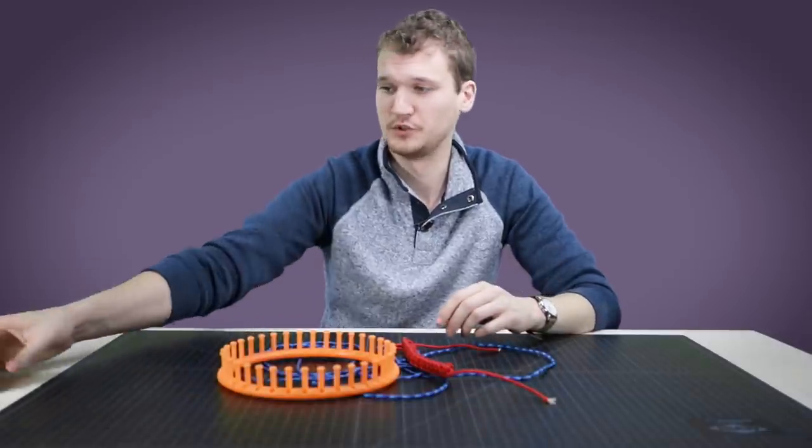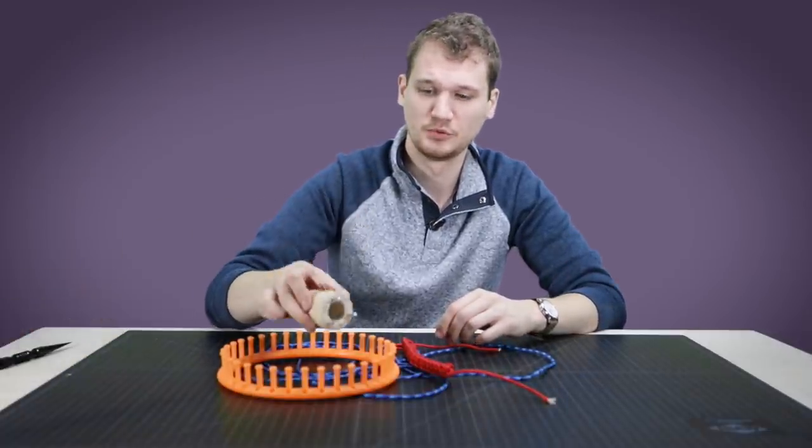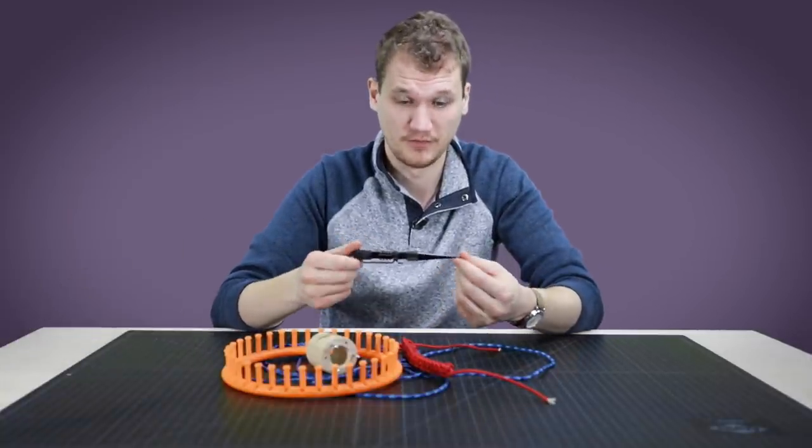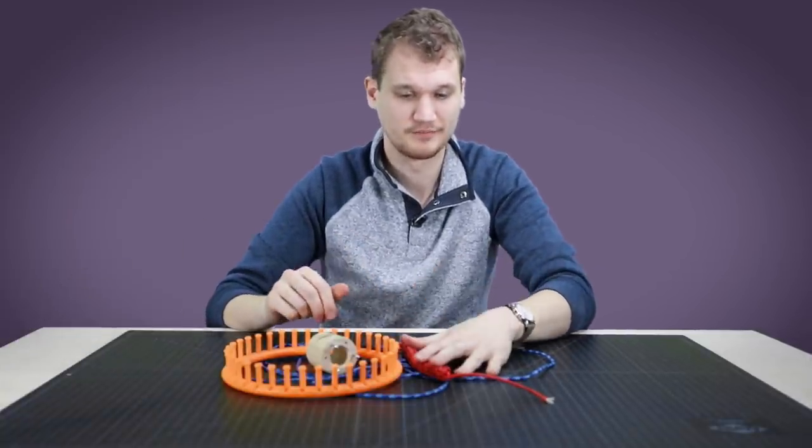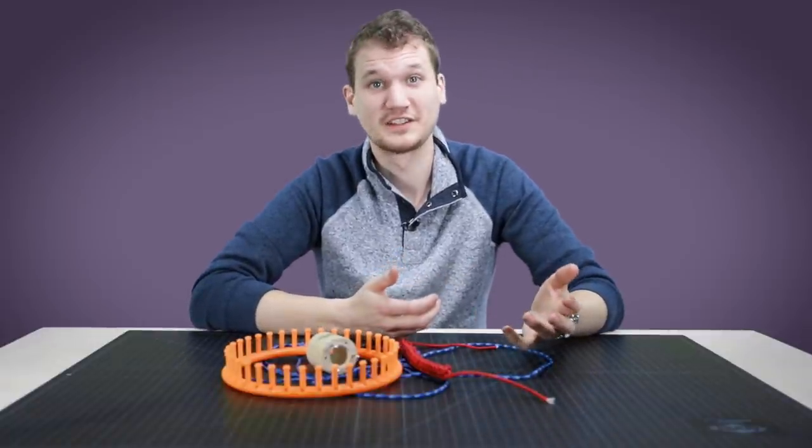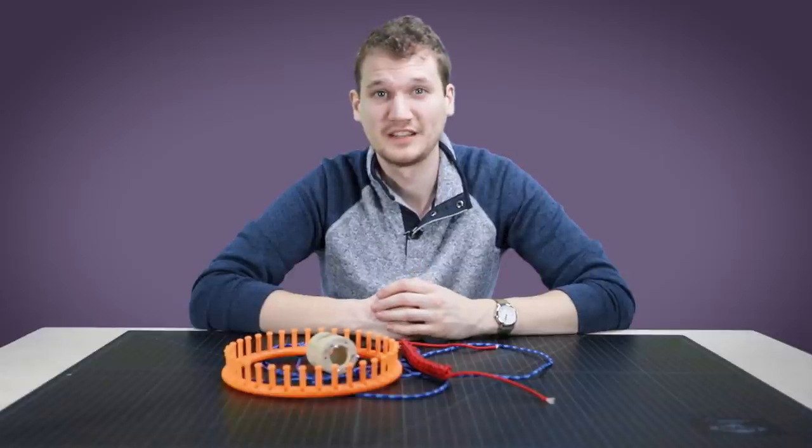So that includes the knotting spool, the loom, the Knotters tool or other fids as well, and oodles and oodles of paracord. Hope you guys like this one. If you did, leave us a like and subscribe. We put out videos twice a week. Otherwise, thanks for watching and we'll catch you next time.